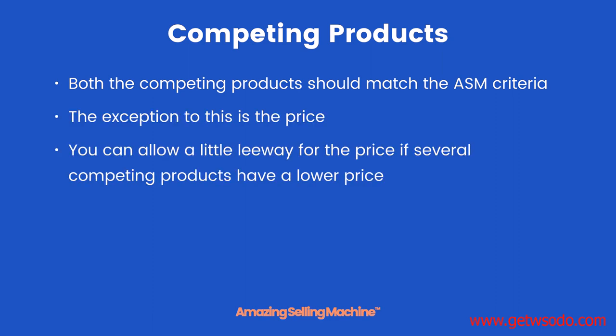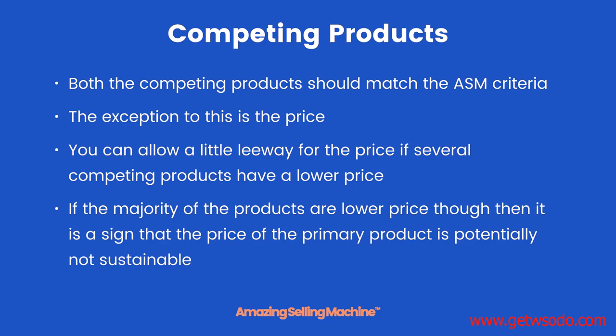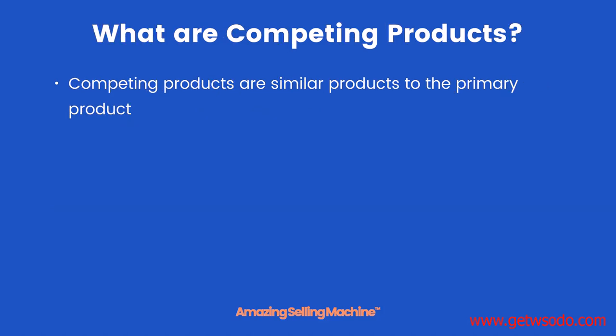The exception to the ASM criteria is price — you can allow a little leeway for price if several competing products have a lower price. However, if the majority of the products are lower priced, it is a sign that the price of the primary product is potentially not sustainable, and we would remove that product.